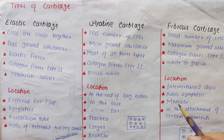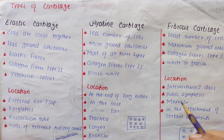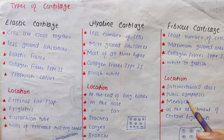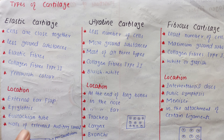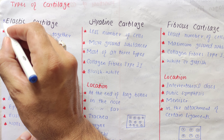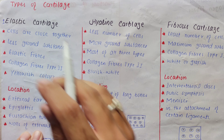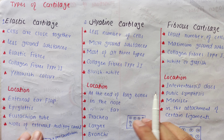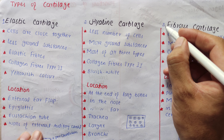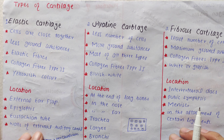Hello students, welcome back to my YouTube channel Study Botanist. Today is lecture 3 of cartilage, and in this lecture I am going to explain types of cartilage. Basically we have three types of cartilage: the first one is elastic cartilage, the second one is hyaline cartilage, and the third one is fibrous cartilage.